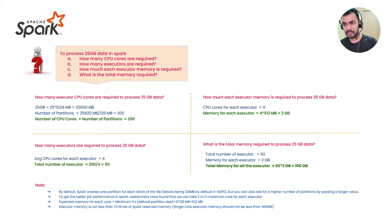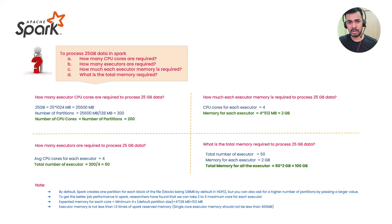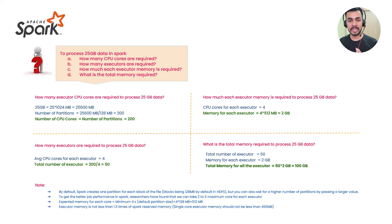With 25 executors (100 cores), only 100 of the 200 tasks run at a time. The remaining 100 wait in queue. After five minutes, the next set of tasks enters the executors and takes another five minutes — total job time is 10 minutes. The concept is clear: configuration drives performance, and you decide based on your scenario.